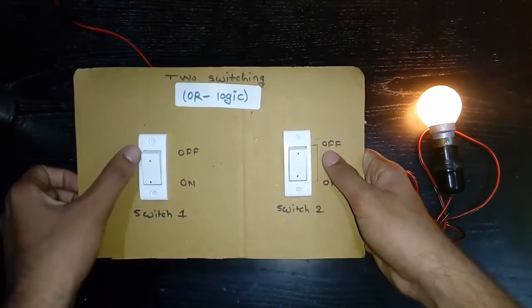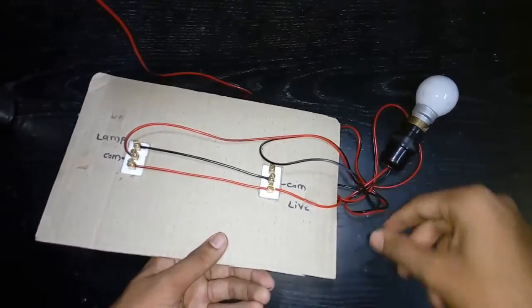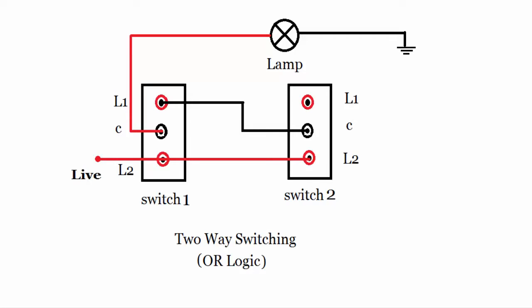L1 of switch 1 is connected to L1 of switch 2. COM of switch 2 is connected to the bulb. See this schematic and truth table.